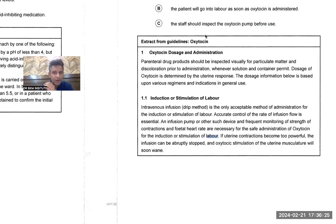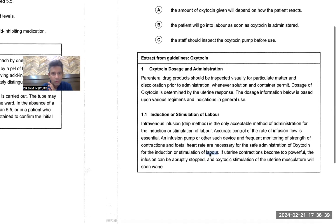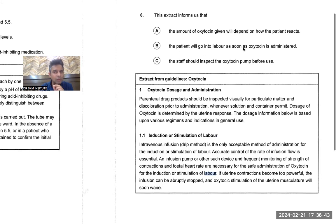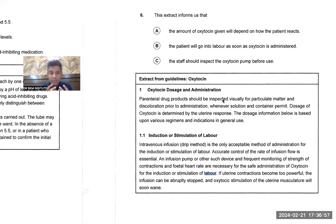The word 'before' is still not given in the second paragraph — not before, not afterwards. If uterine contractions become too powerful, the infusion can be stopped and oxytocin stimulation of the uterus will soon wane. So it is not saying the patient will go into labor as soon as oxytocin is given. 'Staff should inspect' — but the text says parenteral drug products, not specifically oxytocin, and 'before use' is nowhere stated.